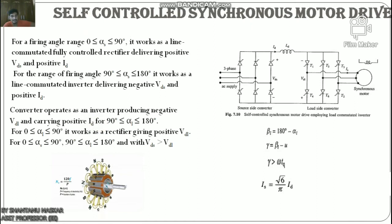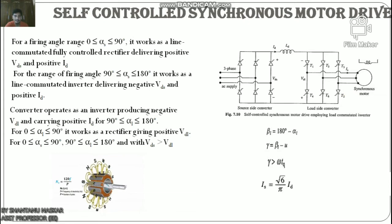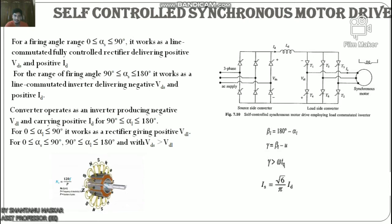For α1 in range 0° to 90°, it works as a rectifier giving positive Vd1. For αs in range 0° to 90° and α1 in range 90° to 180°, with Vds greater than Vdl, the source-side converter works as a rectifier and the load-side converter as an inverter, causing power to flow from the AC source to the motor — giving motoring operation. When firing angles are changed such that αs is in range 90° to 180° and α1 is in range 0° to 90°, the load-side converter operates as a rectifier and the source-side converter as an inverter, reversing power flow for regenerative braking.